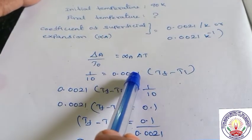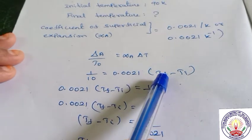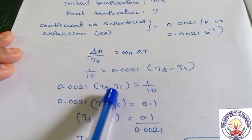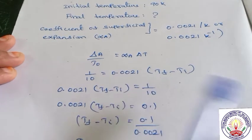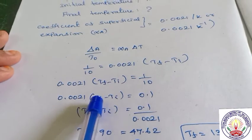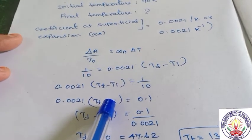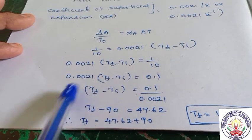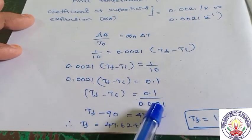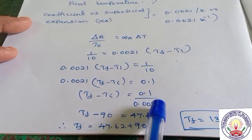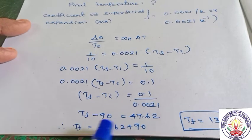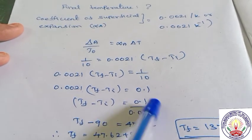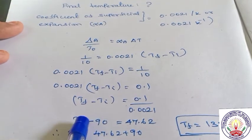So 0.1 divided by 0.0021 gives us the value of delta T — that is final temperature minus initial temperature. So 0.1 by 0.0021 equals approximately 47.62. Now substituting: Tf minus 90 equals 47.62.